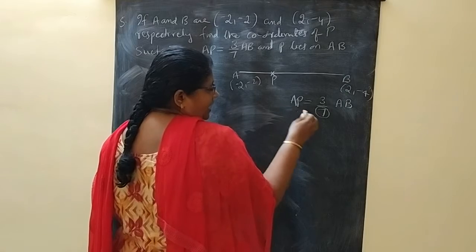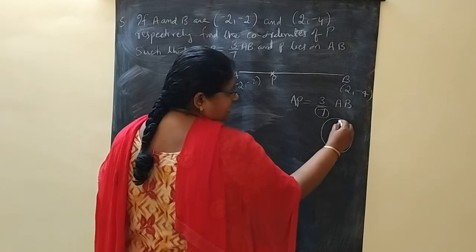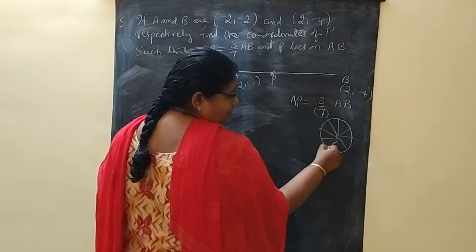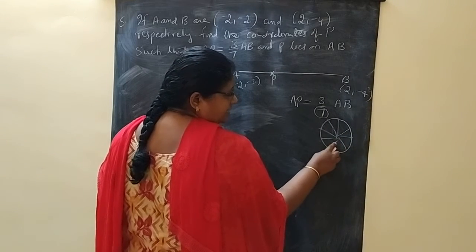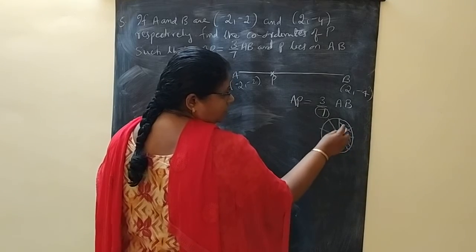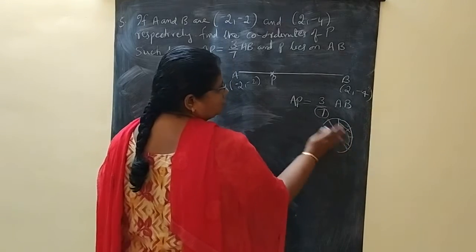When we divide a circle into 7 parts, out of that we are considering 3 parts. That is called 3 by 7.